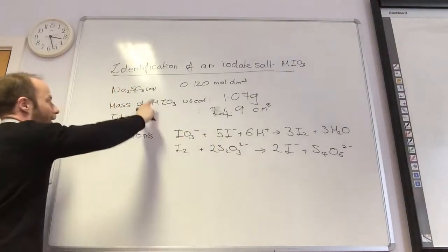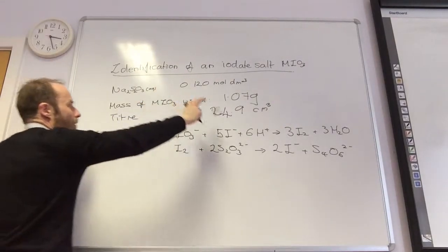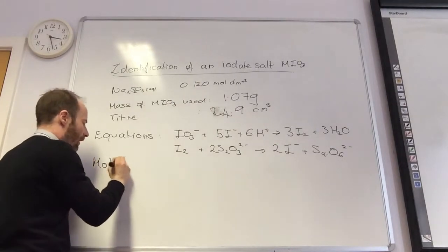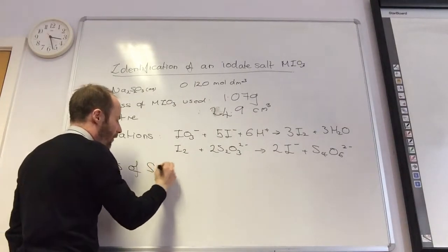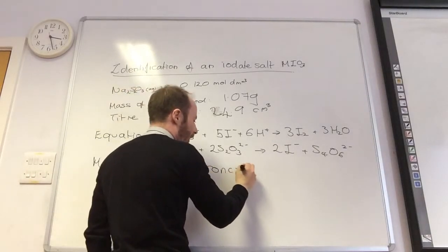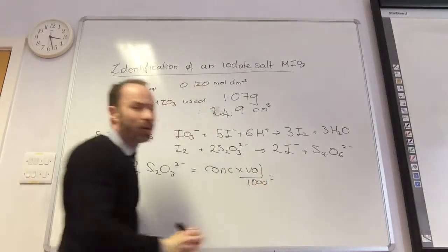So that was my titre. I have got a volume and a concentration, so what can I work out? Moles. So moles of thiosulfate is going to equal concentration times volume over 1,000.